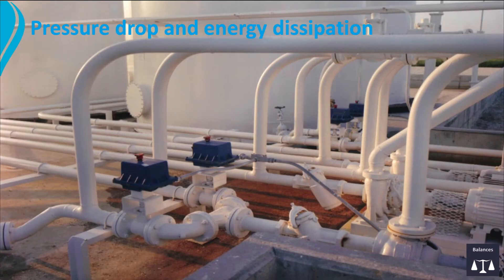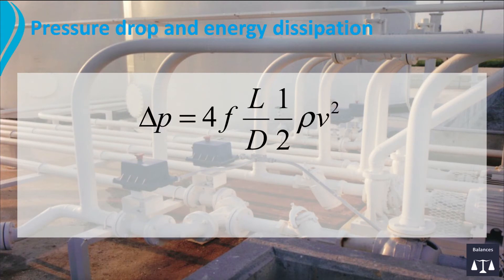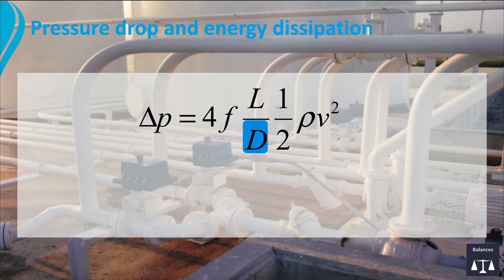In a previous video we have seen that the pressure drop over a straight pipe can be obtained from the Fanning equation. In this equation, F is the friction factor, which is dependent on the Reynolds number; L the length of the pipe; D the diameter; rho the density of the fluid; and V the place and time average velocity in the tube.